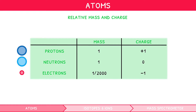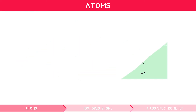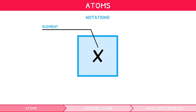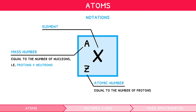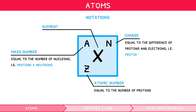As we can see, there are lots of components that make up atoms, so a set of notations are used to describe these components easily. Using X to denote any element, we can say that the mass number, given by the letter A, is equal to the number of nucleons, i.e., protons plus neutrons. The atomic number, given by the letter Z, is equal to the number of protons. And the charge, given by the letter N, indicates the ionic state of the atom, equal to the difference of protons and electrons, i.e., protons minus electrons.